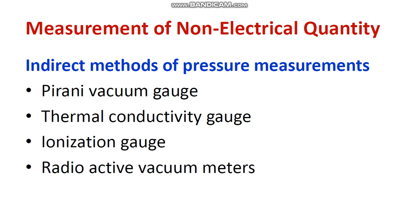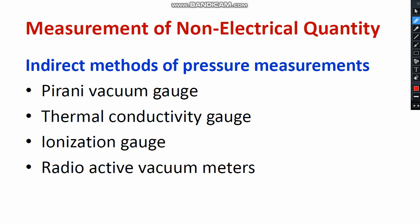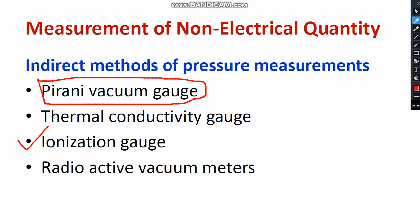Welcome to the playlist of Sensors and Transducers. In the previous session, I mainly concentrated on the indirect method of measurement of pressure — specifically the Pirani vacuum gauge. I explained the construction details, principle of operation, and the concept behind the Pirani type vacuum gauge. In this video, I am going to concentrate on the ionization gauge.